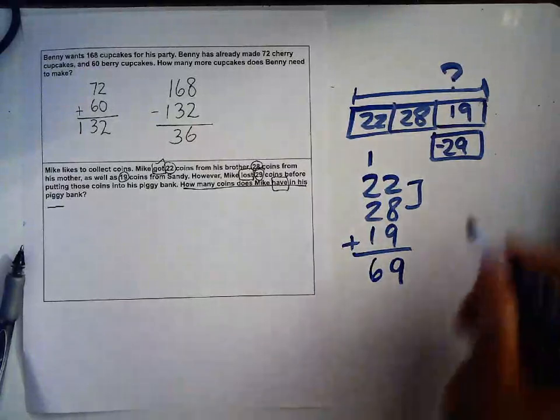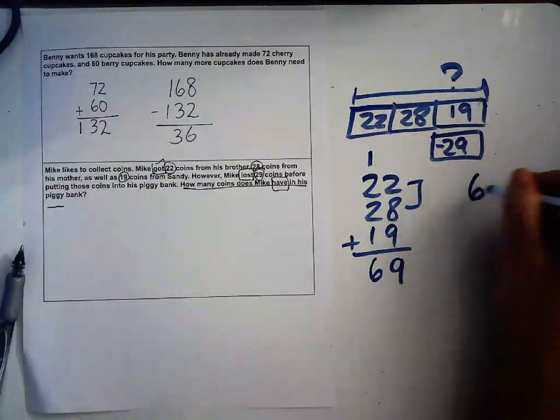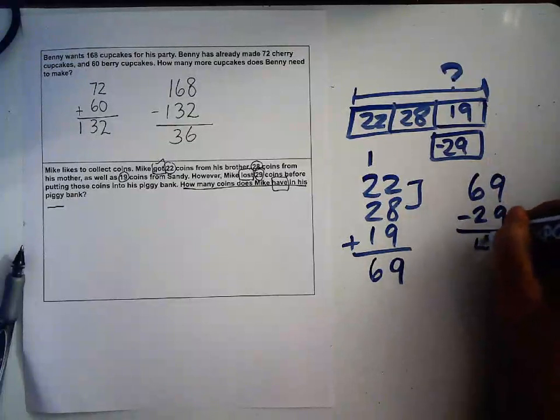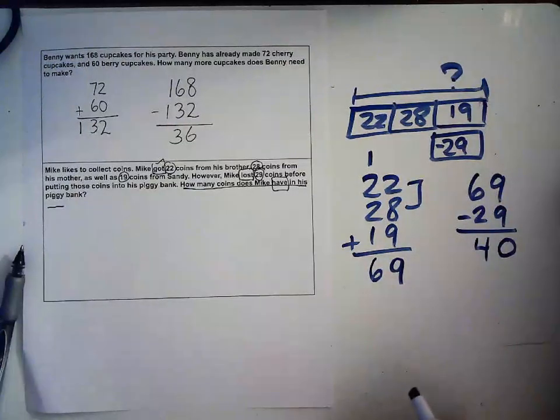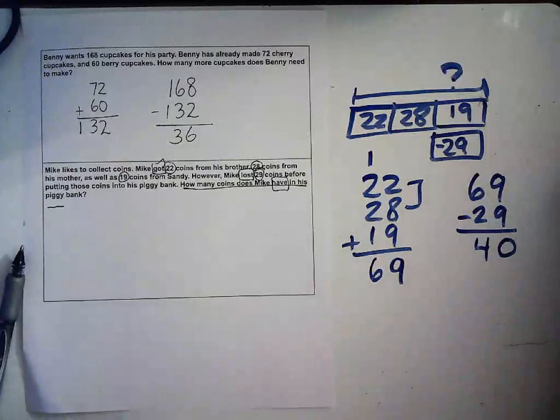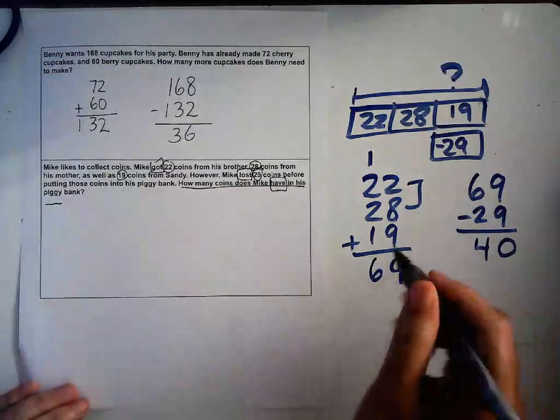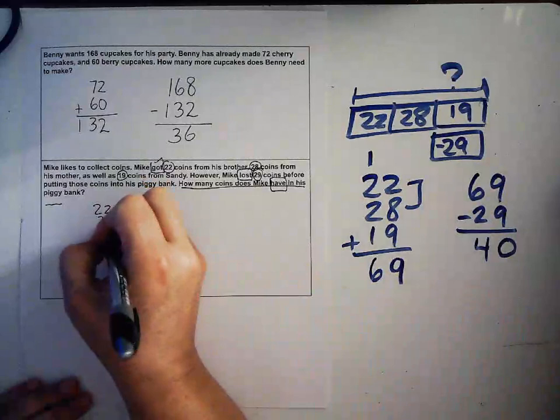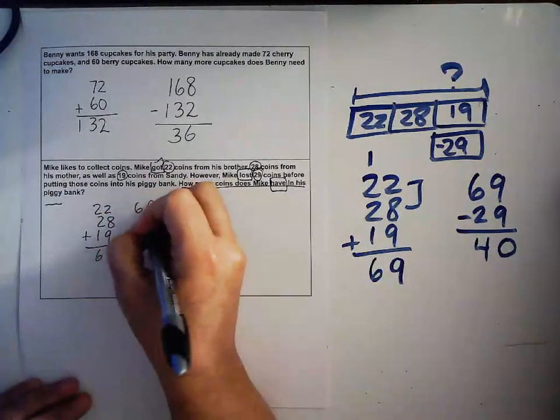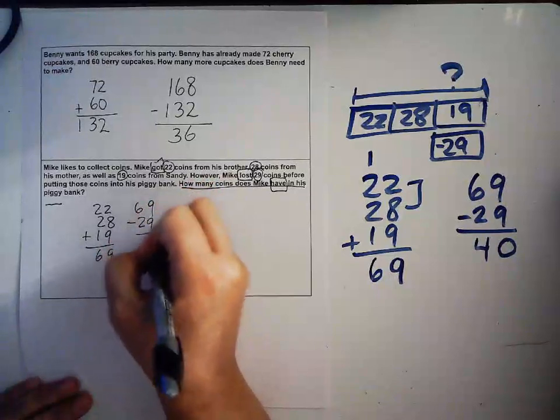Now I'm going to have to subtract the 29 that he lost. 9 minus 9 is 0, 6 minus 2 is 4, so my answer is 40. Can I show it in picture form? Yeah, I can, but I'm going to have to erase all this. It's 22, 28, 19, the answer is 69, and then 69 minus 29 equals 40.